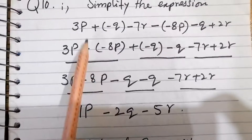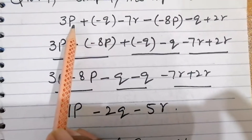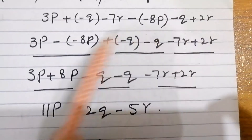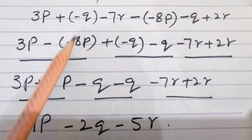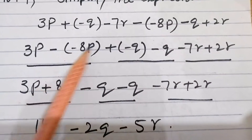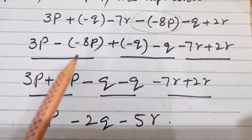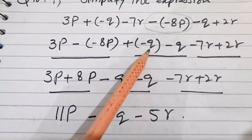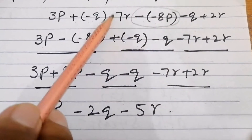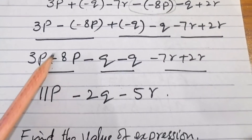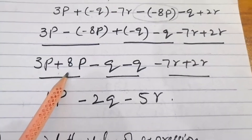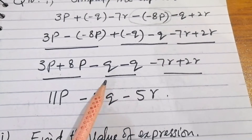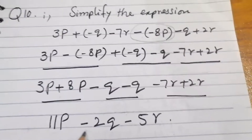Question number 10, part 1: simplify 3p + (-q - 7r) - (-8p - q). Resolving signs: minus minus becomes plus. Gathering like terms: 3p + 8p = 11p; -q - q + q = -2q (combining the q terms); and -7r + 2r = -5r. The simplified answer is 11p - 2q - 5r.